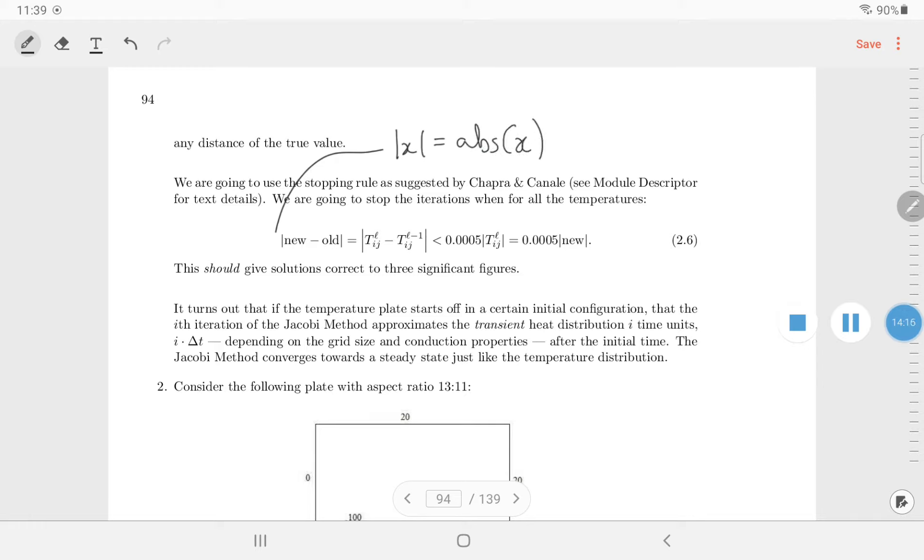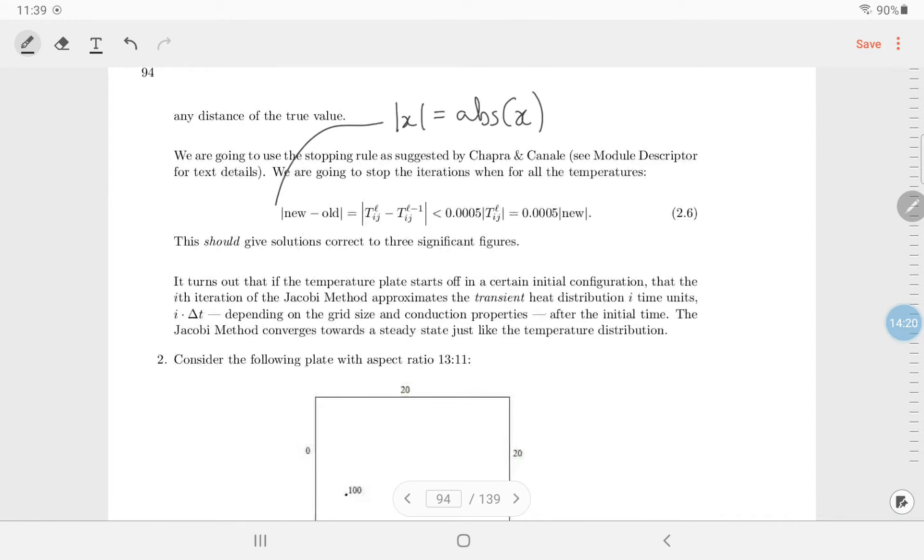It should be the, when the difference between the new and the old, is less than 0.0005 times the absolute value of the null. Now it has to hold for all the temperatures. So in terms of VBA, you're thinking about, and, or something more creative.